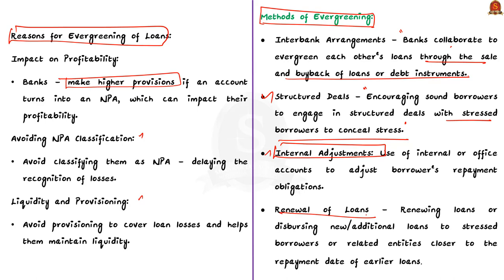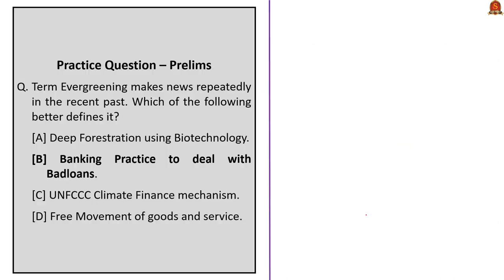With these basics about evergreening, now let us solve the question. The term evergreening makes news repeatedly in the recent past — which of the following better defines it? Out of the four options, option B — a banking practice to deal with a bad loan — fits the correct definition of evergreening. So the correct option is option B.